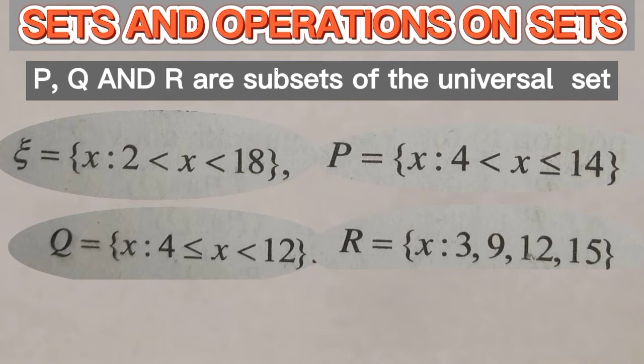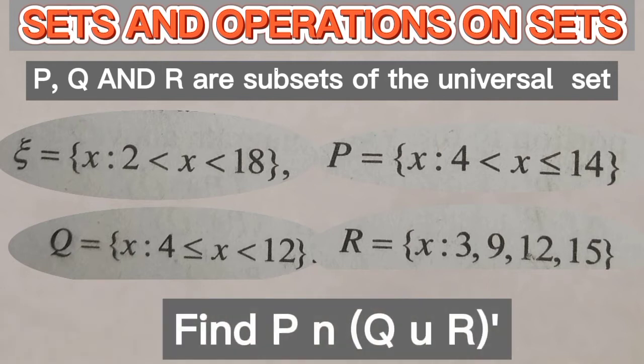12 and 15. We have to find P intersection, brackets open, Q union R prime. That is the complement of the union of Q and R.